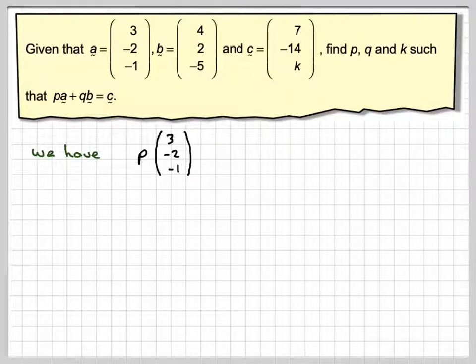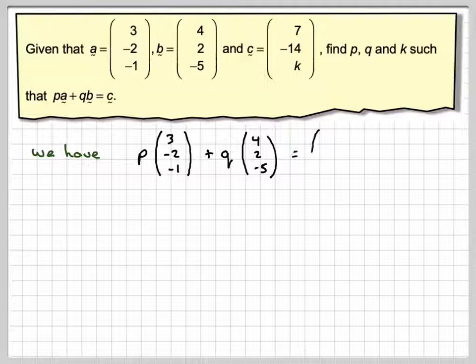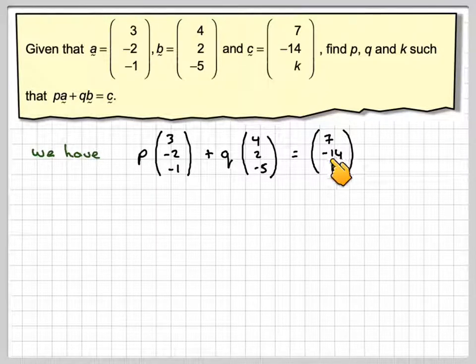So we have p(3, -2, -1) plus q(4, 2, -5) equals (7, -14, k). So we can write down equations from this. We can say that 3p + 4q = 7, and then that -2p + 2q = -14.